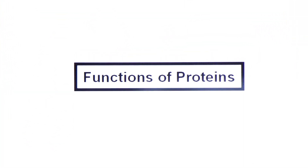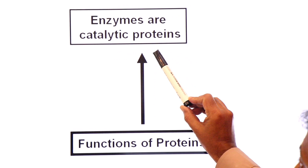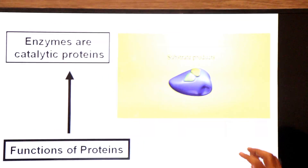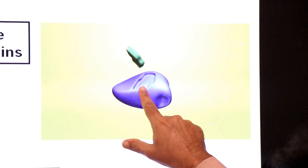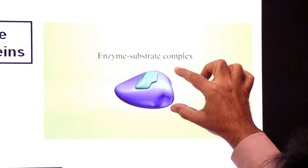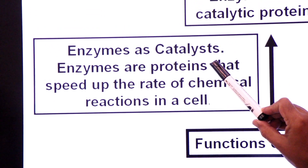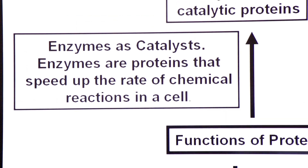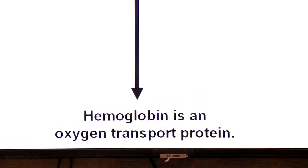Let's discuss the functions of proteins, starting with enzymes as catalytic proteins. A catalyst is a substance which speeds up a chemical reaction. Enzymes are proteins that speed up the rate of chemical reactions in a cell. Enzymes react with a substrate and remain unchanged after the reaction — this is the catalyst function of enzymes.